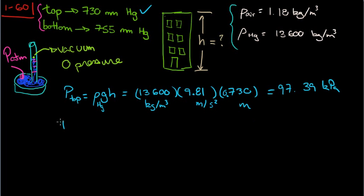And you do the same thing for the bottom: equal ρgh, and you use the h for the bottom, which is 755, same value for ρ because it's still mercury, and g is the same value always. So that should give you 100.73 kilopascals at the bottom. So logically, the bottom has a higher pressure than the top.